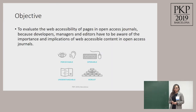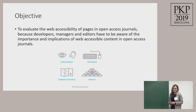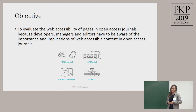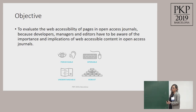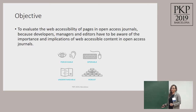The objective of the research we made was to evaluate the web accessibility of pages in open access journals, because developers, managers, and editors have to be aware of that topic. Sometimes we think that accessibility is just a concern for developers or designers, but it's not. Editors and staff have to be aware of it too, because some information put on the site is added by the editor, staff, or an assistant — not the developer. You can follow some guidelines to make the information more accessible.